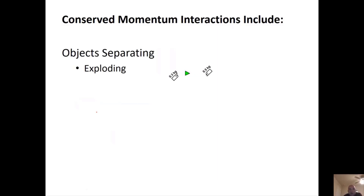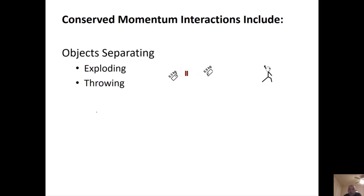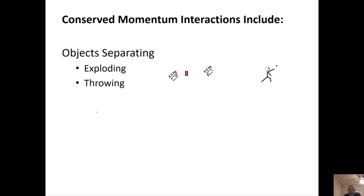We're going to look at interactions and break out equations from the conservation of momentum equation. Objects can stay as one piece at the beginning and then separate — like exploding. Or throwing: if you have a pitcher, the ball and pitcher are one at the beginning, they're standing still, they wind up and pitch. The ball starts moving and the pitcher starts moving, and on a frictionless surface he would go backwards as he pitched the ball.